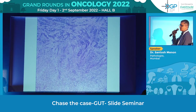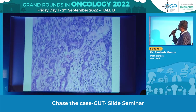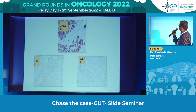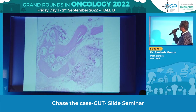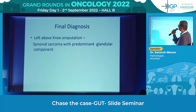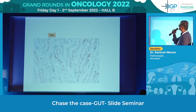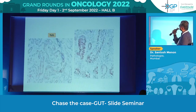AE1/AE3 showed a mosaic pattern, BCL2 was positive, and the tumour was infiltrating bony trabeculae and destroying bone. TLE1 was positive — you can see the nice nuclear positivity for TLE1. So it's basically a synovial sarcoma, predominantly glandular component.